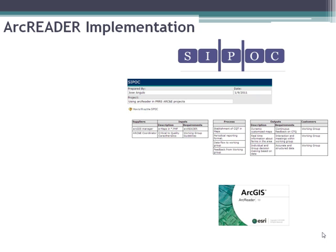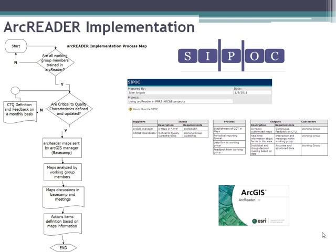After we have a SIPOC model defined, the next steps will be to generate the process map. This is an example of how we can implement a process map.